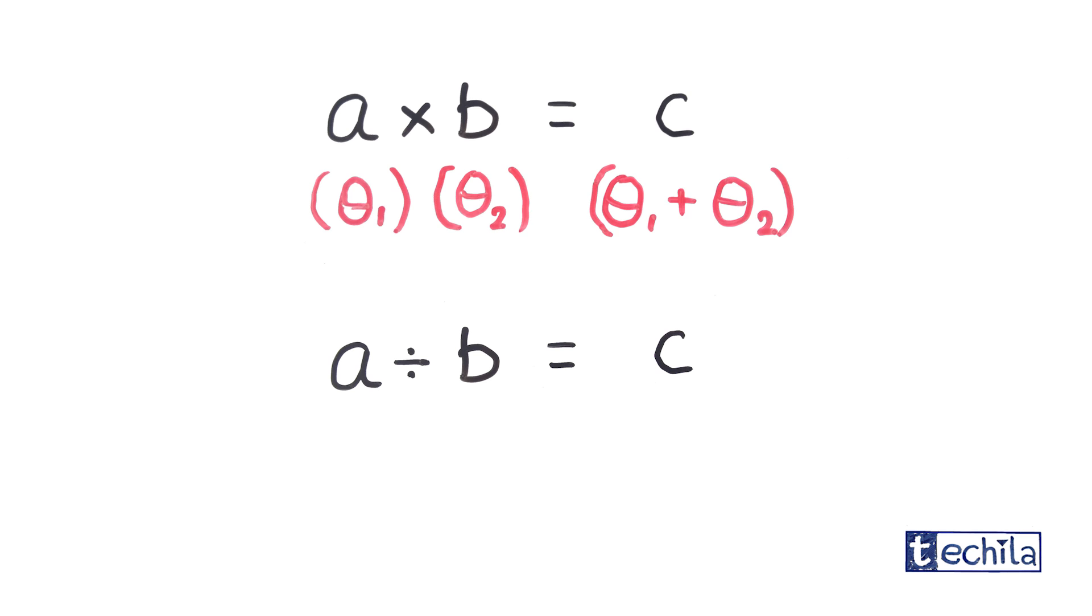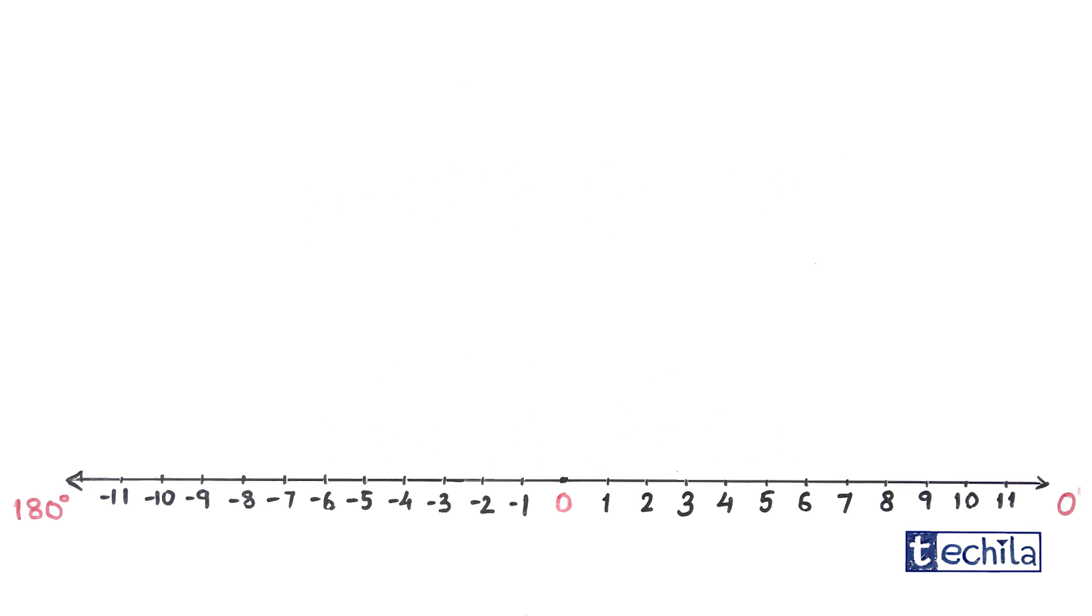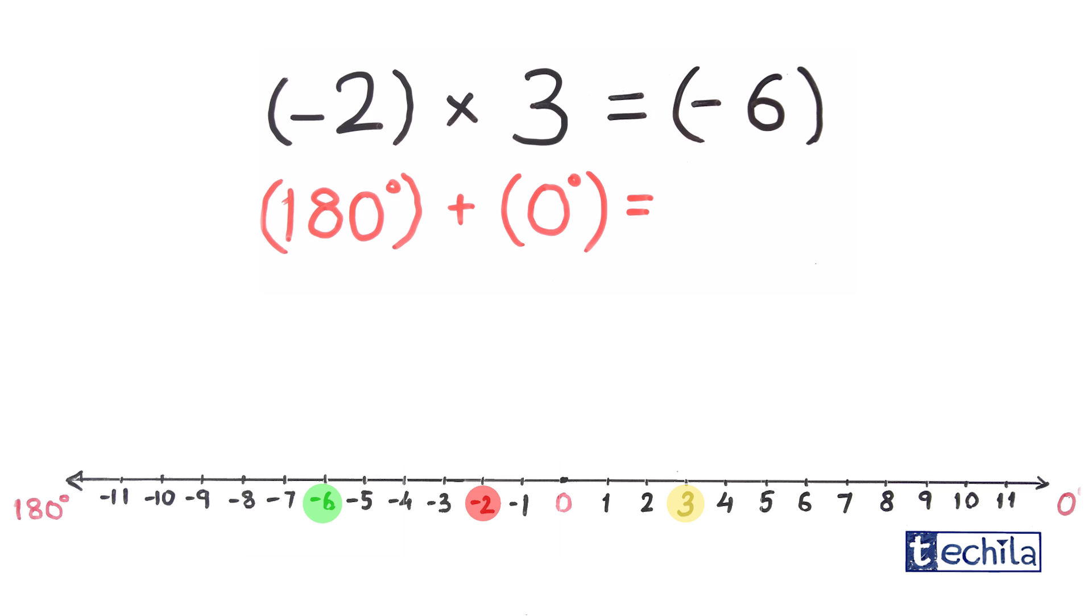Also, it is found that when two numbers are multiplied or divided, their phase shifts are added or subtracted respectively. Like for example, when a 180-degree phase shifted number, say minus 2, is multiplied with 0-degree phase shifted number, say 3, we get minus 6 which has a phase shift of 180 degrees.